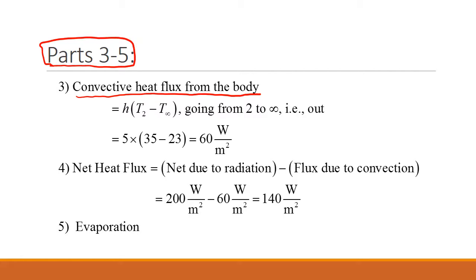The convective heat flux from the body means if the body is surface 2, it's 2 to surroundings. Surroundings we often denote by infinity, so it's 2 to infinity. If I write H times T2 minus T infinity, then it's going from 2 to infinity, which means it's going out, which means it's the right quantity because we want from the body.